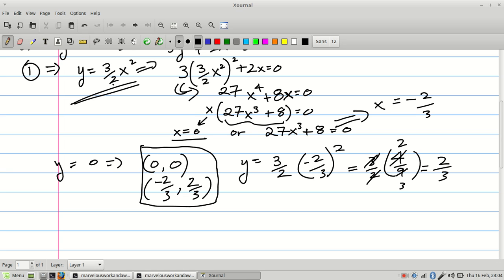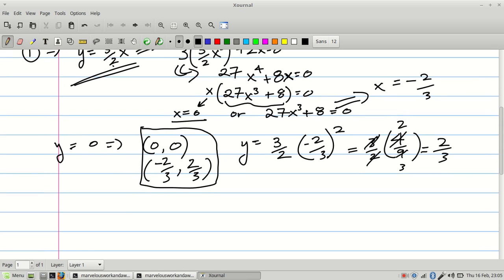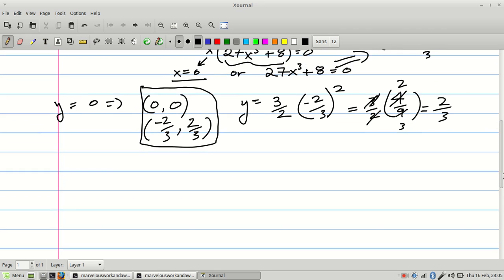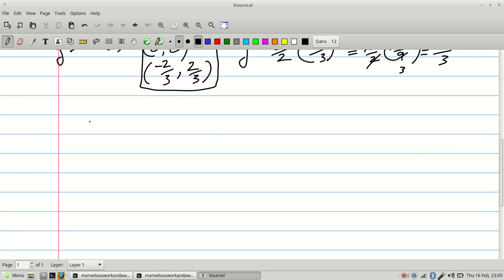So these are my critical points. Now I've got to figure out which one is a saddle, which one is a relative or a local minima, or a local maxima. Now they give you a little function that you can use. And the function is essentially the following. It is a function that depends on the critical point AB. So if I have a general critical point AB, the function goes second order derivative of F with respect to X at that critical point...